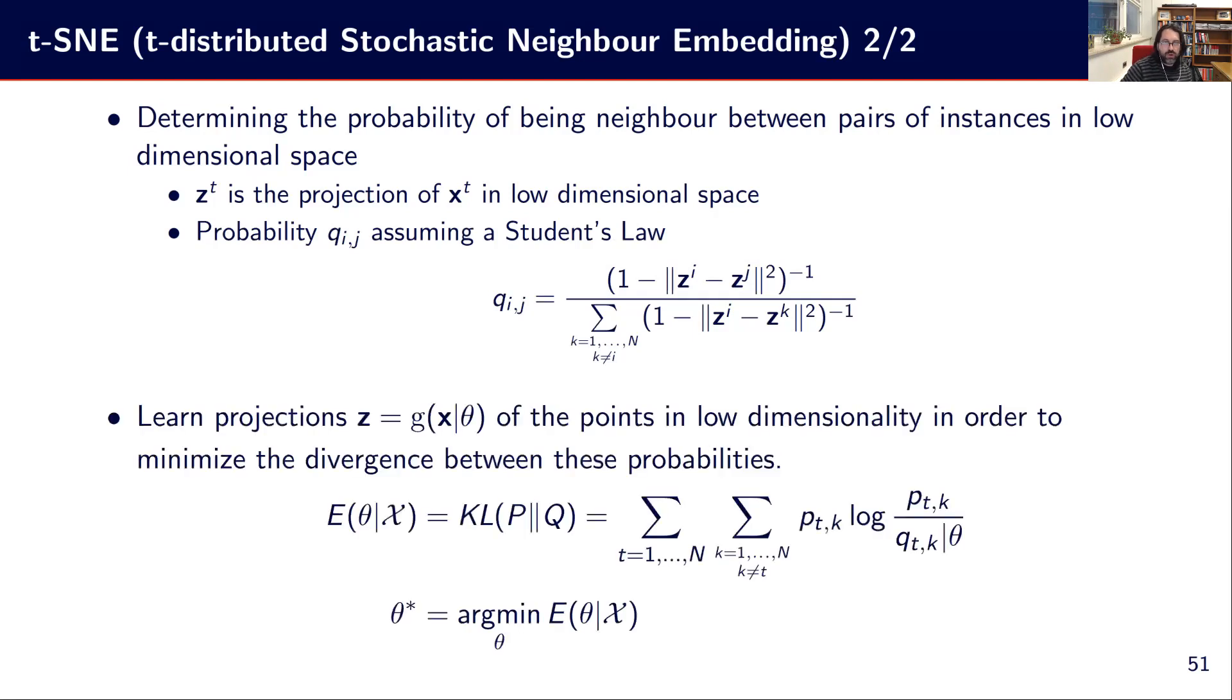And the point is to learn a projection of the points in low dimensionality in order to minimize the divergence. So we say we have the distribution of the neighbor, probably the probability of being neighbor in the original space. We have the distribution of the probability of being neighbor in the transformed space. We want these two distributions to be well aligned. We want to make them aligned. We want to minimize the divergence between these distributions. And this is based on KL, Kullback-Leibler divergence that we are using here as a criterion to optimize. And then we can learn a neural network based on that criterion that will make the mapping to ensure that the neighbor probability is preserved in terms of statistical distribution as much as possible.